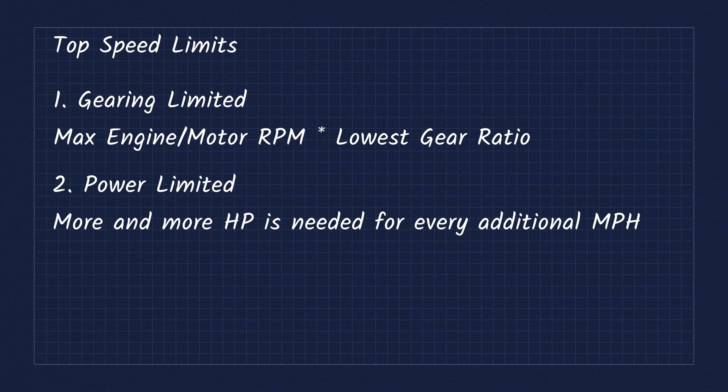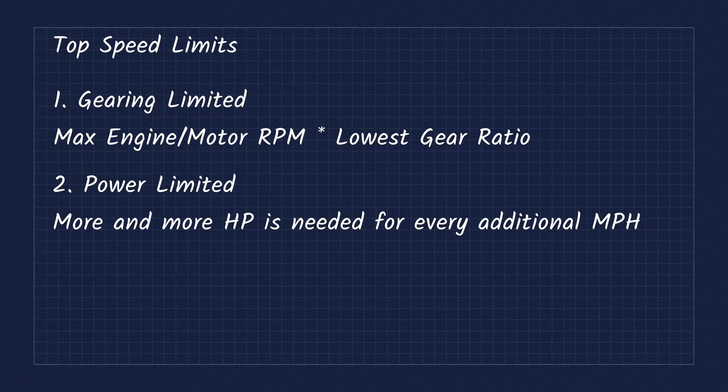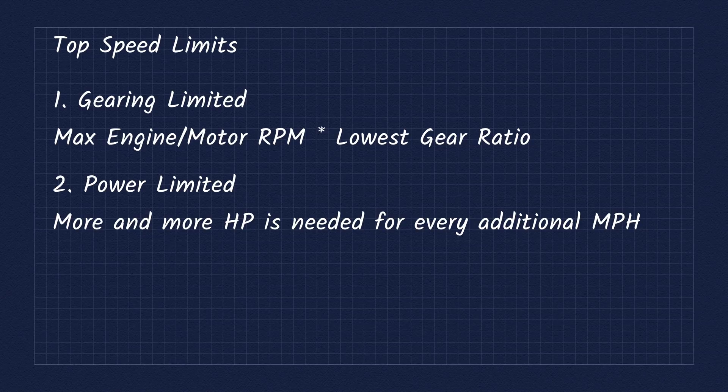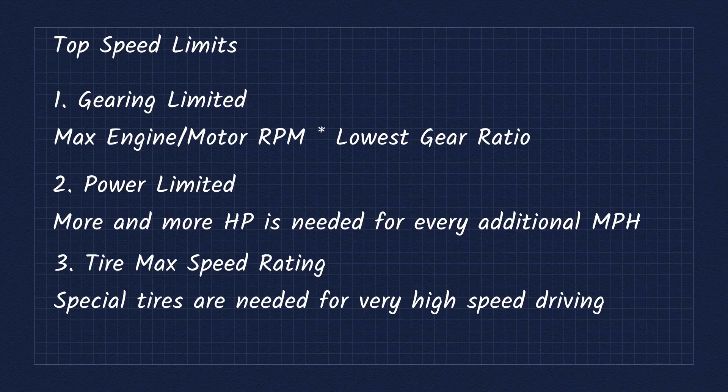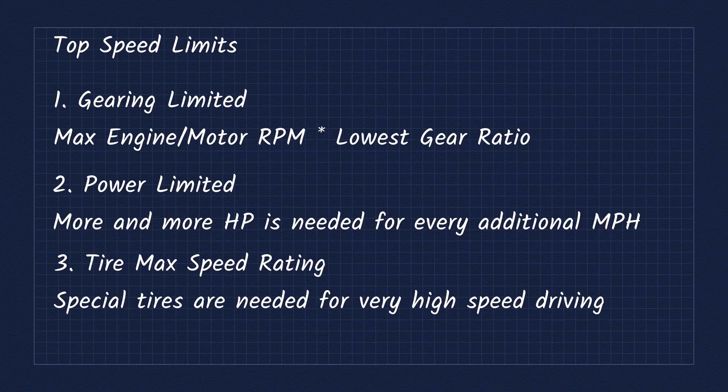The second limitation is power output. So even if you have a 10 speed transmission capable of reaching 300 miles an hour, your top speed will be limited by the forces acting on the car. Another limitation is the design of the tires. Car tires are spinning very fast at max speeds, and you'll need special tires with super high speed ratings to hold up to those extreme conditions.